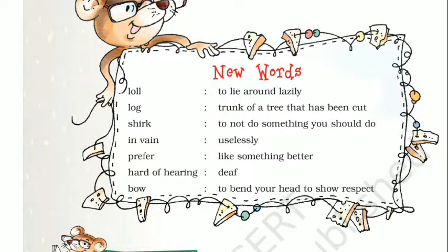Here are some new words. Loll — to lie around lazily; matlab sust hokar aalsi pan ke saath lait rehna. Log — trunk of a tree that has been cut; peeled ka kya hota — tanah jisko kaat diya jaata hai. Shirk — to not do something you should do; matlab koi kaam jisme karna chahiye na karna, kaam churaana.